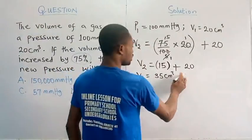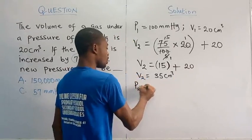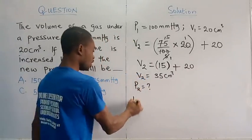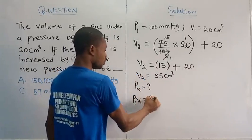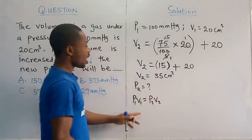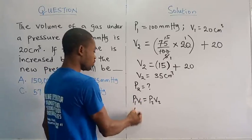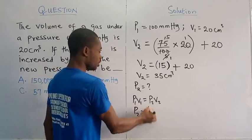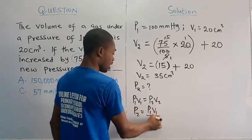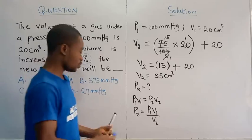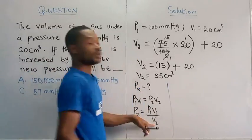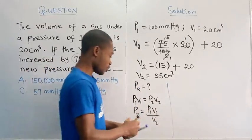So with this now, we can say we don't know P2, that's what we are looking for. Now recall that P1V1 is equal to P2V2. And we are looking for P2. So if you make P2 subject of the formula, it's going to be P1V1 divided by V2. Let us fix up our values into this equation now to get our final pressure.